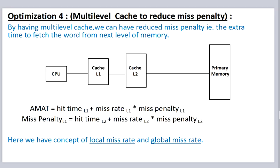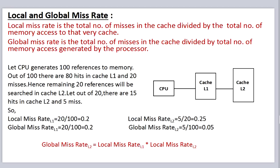Here we have the concept of local miss rate and global miss rate. Local miss rate is the total number of misses in the cache divided by the total number of memory accesses to that very cache. Global miss rate is the total number of misses in the cache divided by the total number of memory accesses generated by the processor.